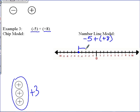One, two, three, four, five, six, seven, eight. And our end result, or our sum, is positive three.